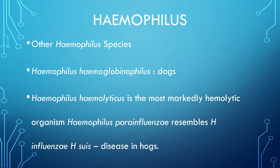Other Haemophilus species: Haemophilus haemoglobinophilus infects dogs but not humans. Haemophilus haemolyticus is the most markedly hemolytic organism of the group in vitro, found in the normal nasopharynx and occasionally associated with respiratory tract infections of moderate severity in childhood. Haemophilus parainfluenzae resembles H. influenzae, is a normal inhabitant of the human respiratory tract, and is encountered in infective endocarditis and urethritis.